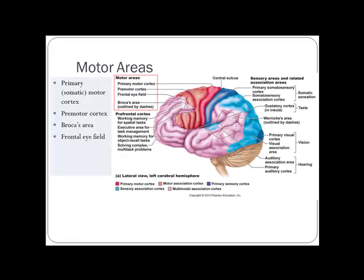In the motor areas of the frontal lobe, we have the primary motor cortex, the premotor cortex, the frontal eye field, and Broca's area — which is responsible for speech. These are all found anterior to the central sulcus.